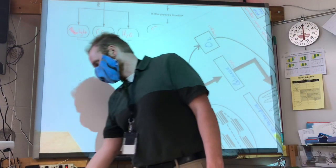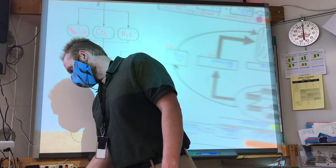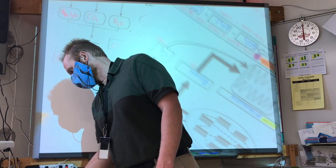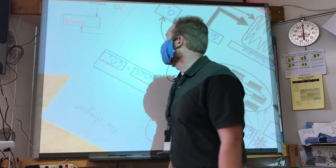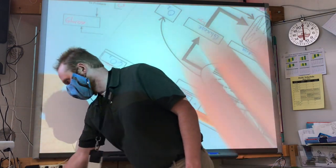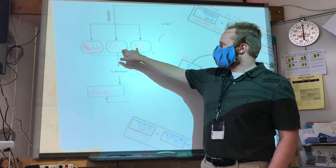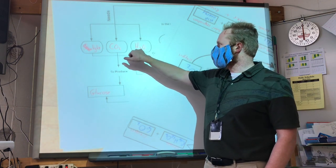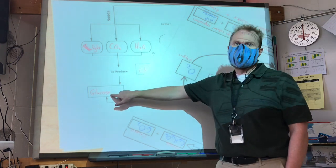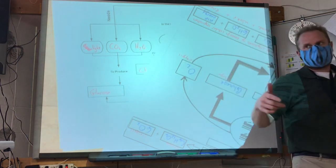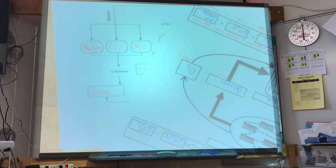What does photosynthesis make as a product? We take CO2 and H2O together, and we get glucose — C6H12O6. We put those together and we get glucose.